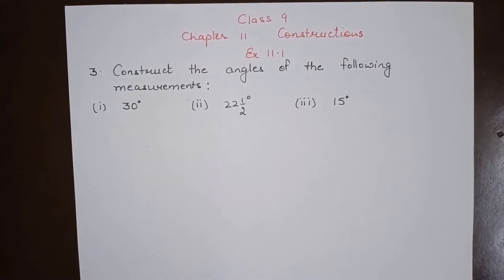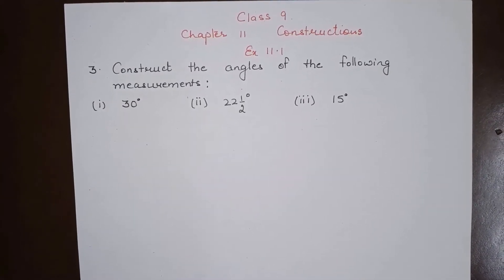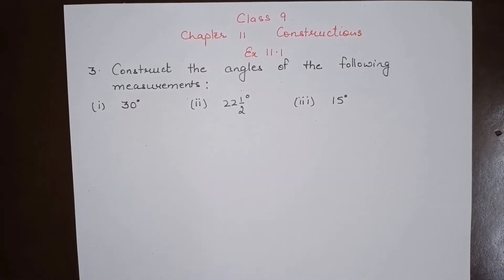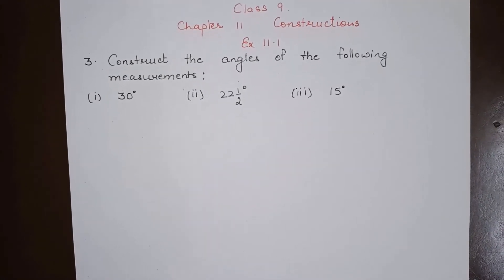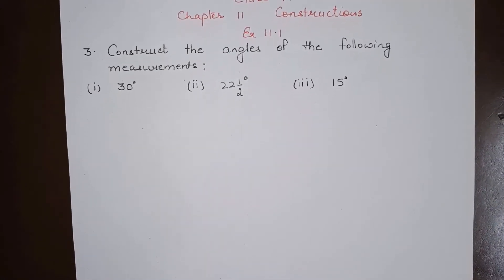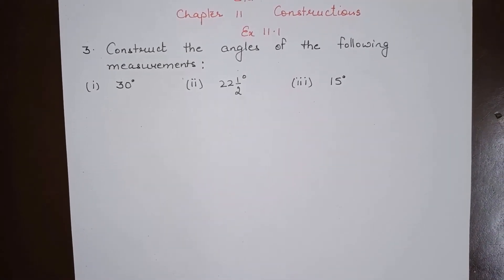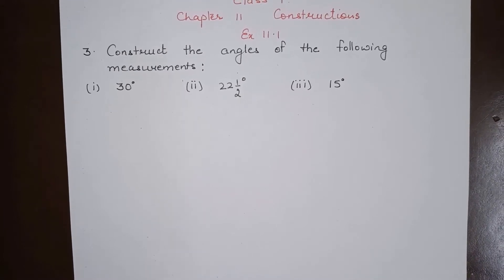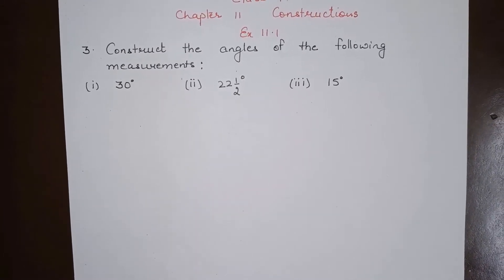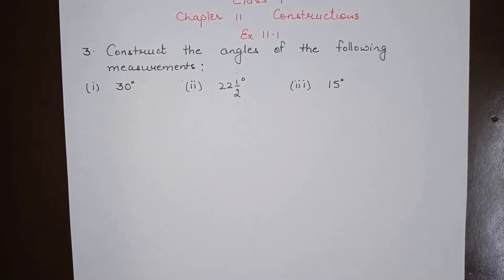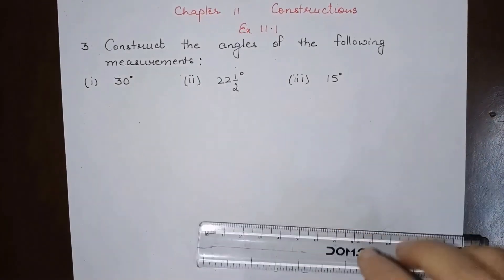Hello everyone, today we will do class 9th chapter 11th constructions exercise 11.1 question number 3: construct the angles of the following measurements. The first one is 30 degrees. Let us start and make an angle of 30 degrees.